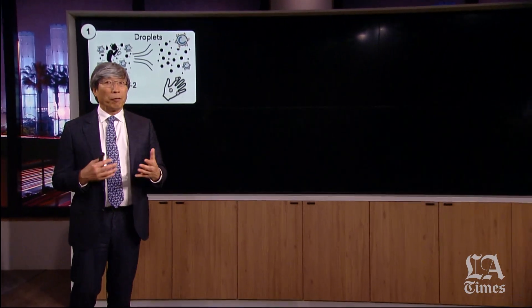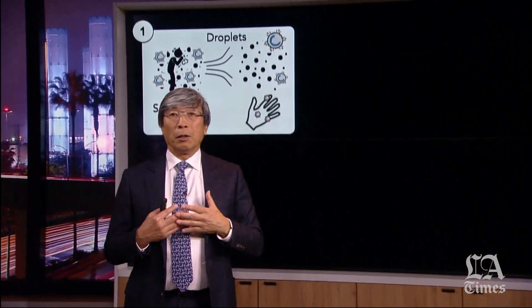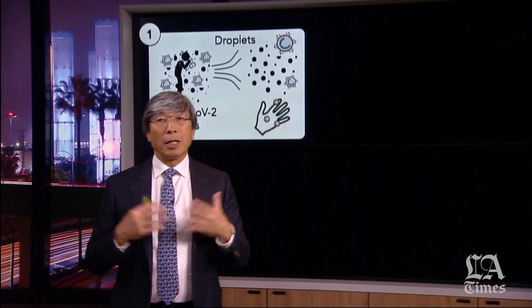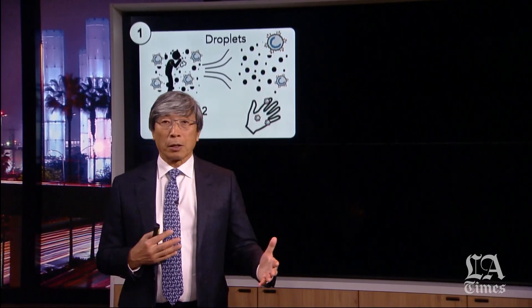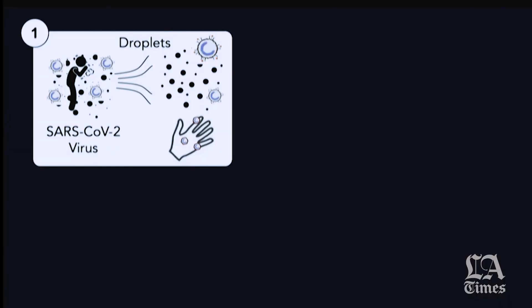An infected person has the ability to contaminate 2.6 other patients. How does that happen? It's droplets — this nanoparticle of a virus forms droplets, and these droplets can go on surfaces and onto your hand. The important fact is that your hand is now a vector. We'll come back to how we can use that fact to our advantage and kill the virus.